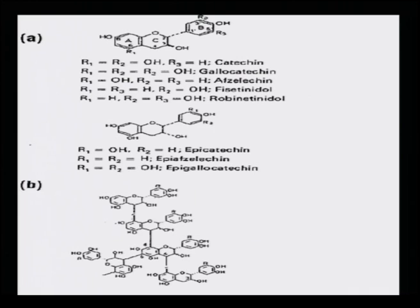The structures show a typical flavonoid kind of structure with many hydroxy groups — including epicatechin and epigallocatechin. These are all condensed tannins, whereas catechin and rhatidiol are single molecules.